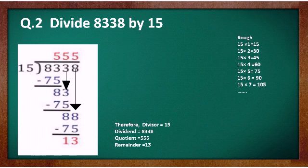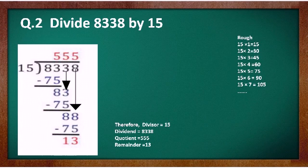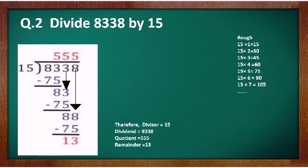Now the next question — observe it. Here the divisor is a 2-digit number and the dividend is a 4-digit number. We need to apply the steps properly. Since 8 is less than 15, we take 2 digits, that is 83. In the 15 times table, 15 × 6 = 90, but 90 is more than 83, so we take 15 × 5 = 75. Then subtraction, and repeat the process. Therefore the divisor is 15, dividend is 8338, quotient is 555 and remainder is 13.